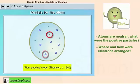In Thomson's model, the positive and negative charges were randomly located inside the atom.